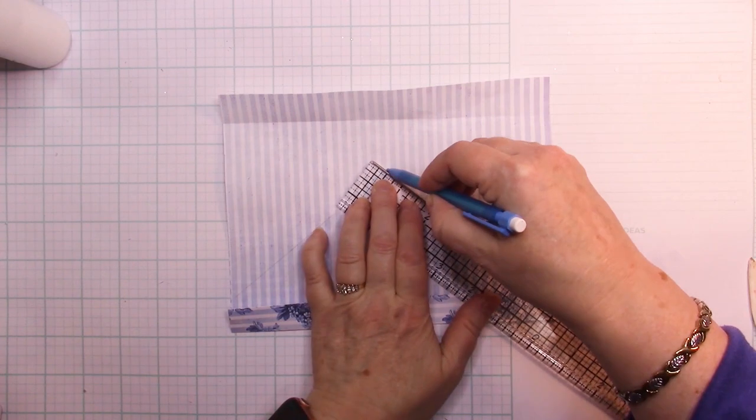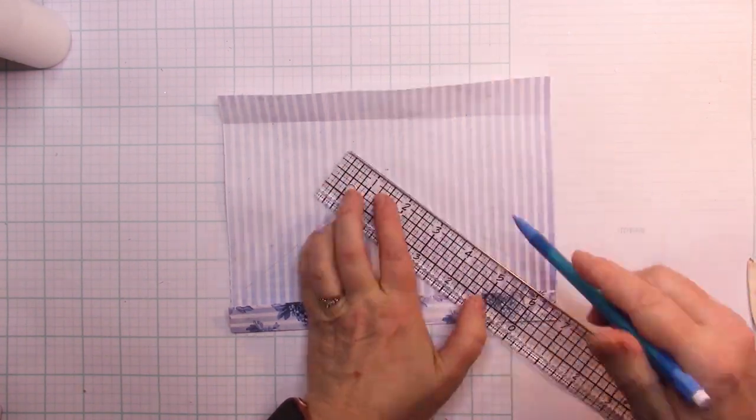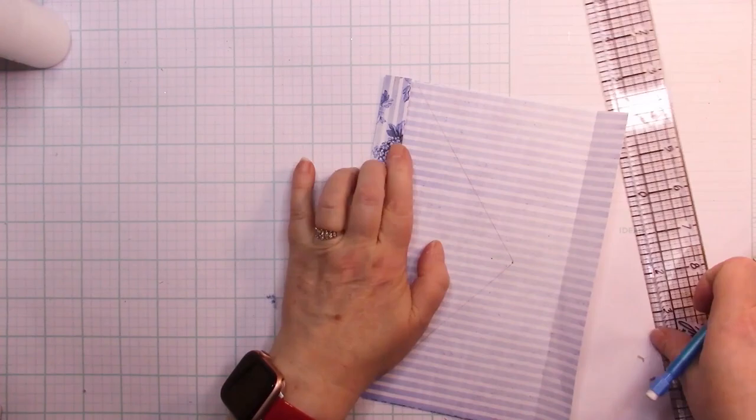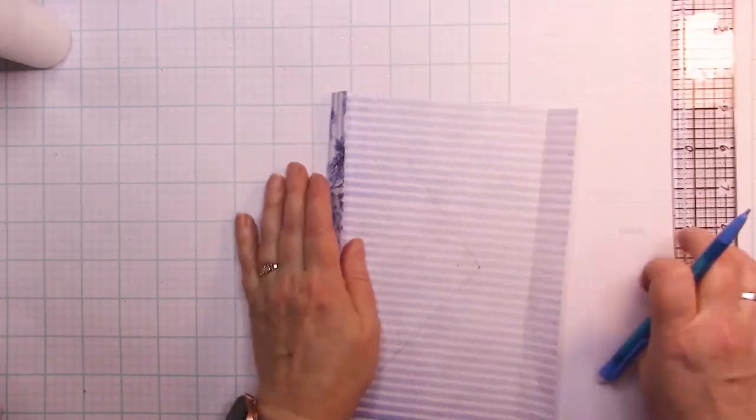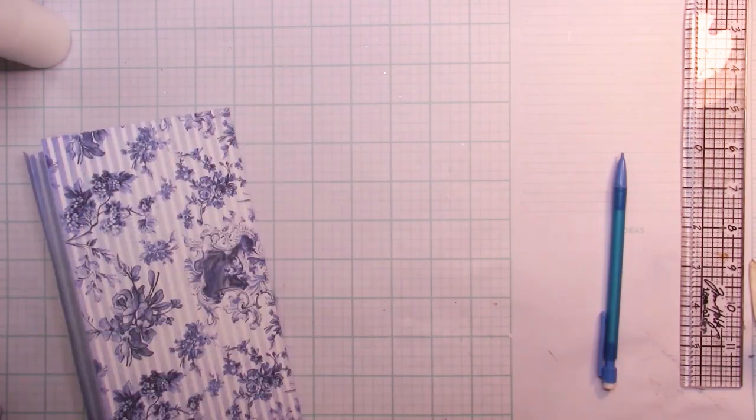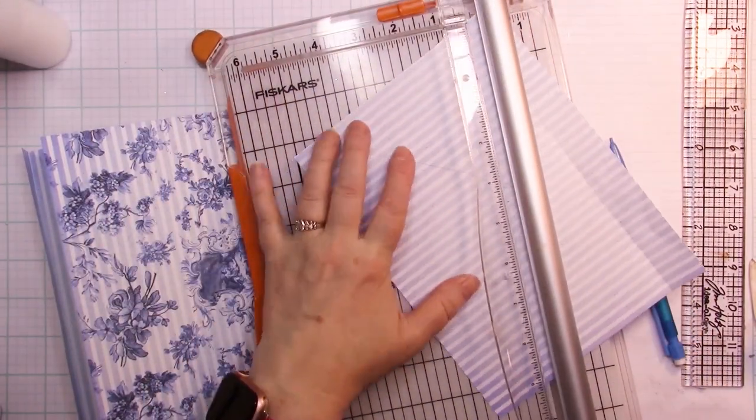I'm going to line up that marking with the edge, that edge right there of the top of my envelope that we just folded over, and I'm going to make a line. Nice and easy. Take your scissors and go ahead and cut that out.